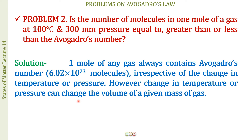A change in temperature or pressure can change the volume of the gas. But if it is one mole of a gas, it remains always one mole. When it is one mole, the number of molecules also remains the same and is equal to Avogadro's constant.